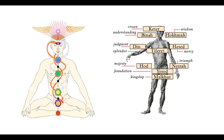Going back to the caduceus — even though it has nothing to do with medicine and corporations are displaying it incorrectly, it does contain a lot of truth within the symbol. Setting aside everything to do with commerce and just looking at what it is — the rod or wand with two snakes twirling around it and wings at the top — the caduceus also represents the nadis in your body.